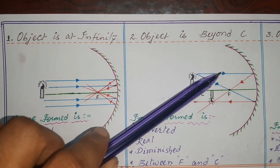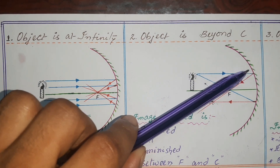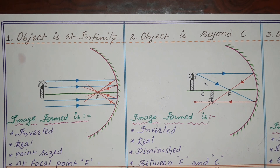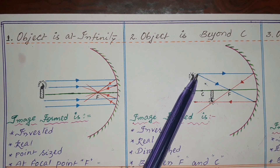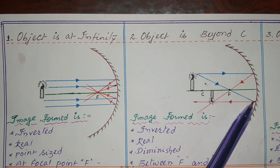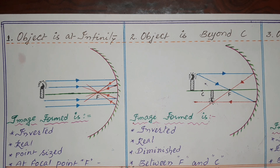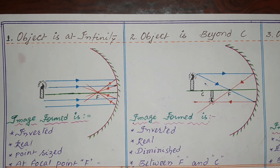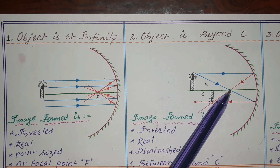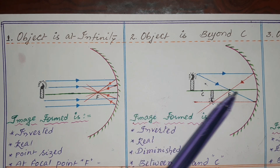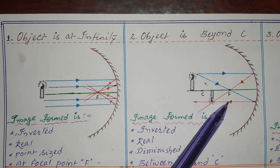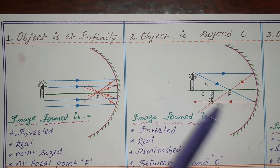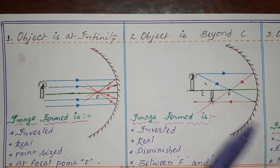The light ray traveling parallel to the principal axis passes through the focal point after reflection. The light ray traveling towards the focal point becomes parallel after reflection. There is a symmetry between these two rays — the parallel ray passes through focus, and the ray passing through focus becomes parallel. After reflection, the light rays meet at a point where the image is formed.